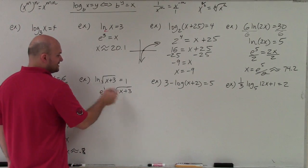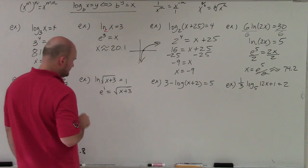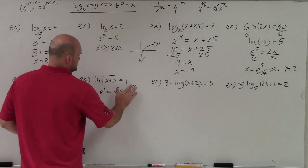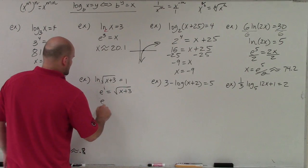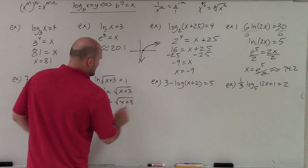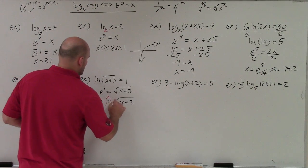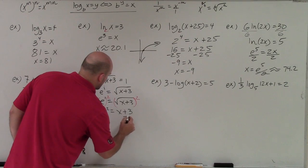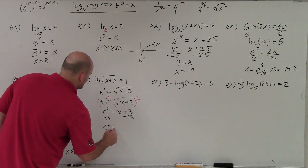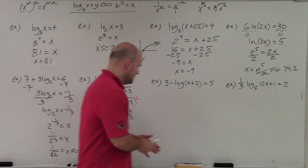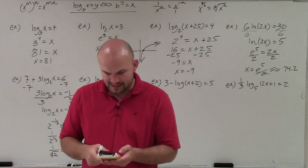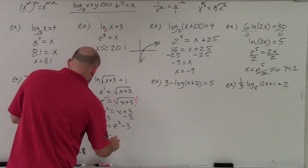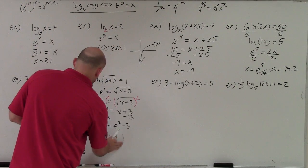I still want to undo the square root, so I'll square both sides. Therefore, e squared equals x plus 3, and then I subtract 3: x equals e squared minus 3. Using my calculator, e squared minus 3 gives approximately 4.38, so x equals approximately 4.4.